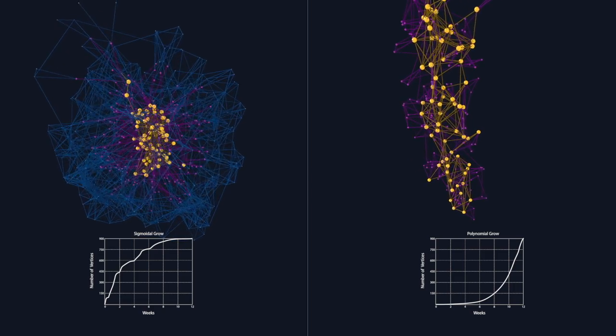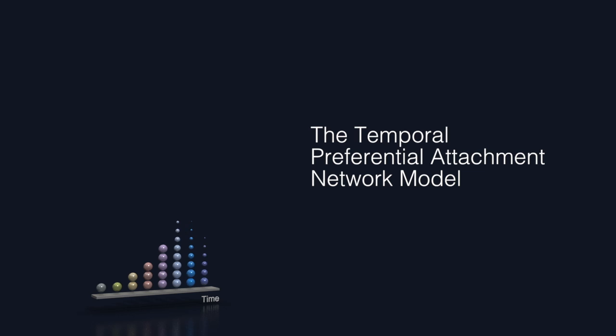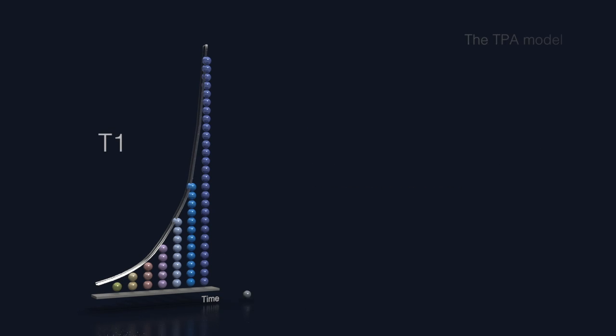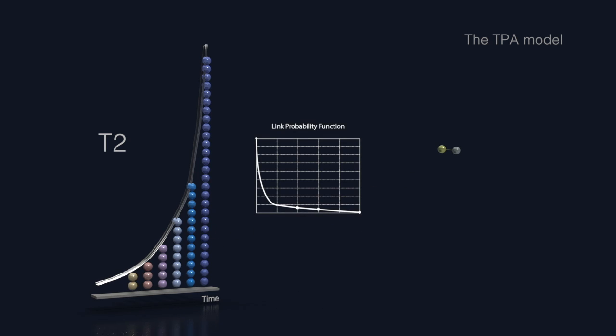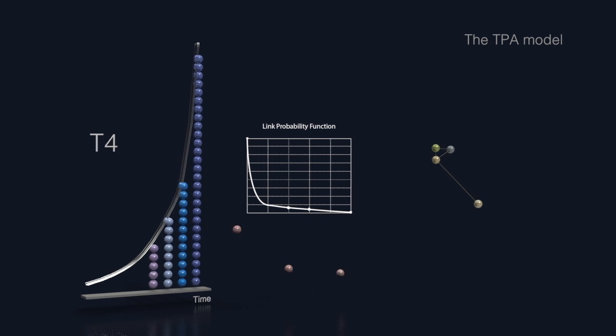Based on these observations, we have developed a simple network generation model. According to our model, in each time iteration, a group of new vertices join the network together. Each vertex in the group establishes new links, first by selecting the time group to connect using the probability function, where links are usually created among vertices that join the network at a similar time.